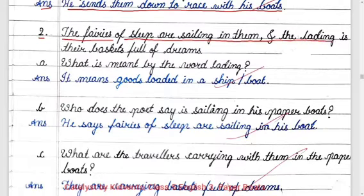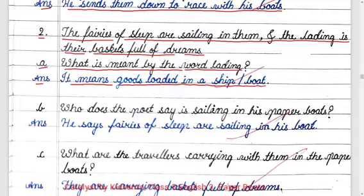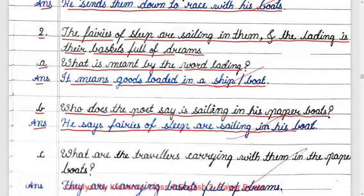Second question: 'The fairies of sleep are sailing in them and the lading is their baskets full of dreams.' Part a: What is meant by the word 'lading'? Answer: It means goods loaded in a ship or boat. Part b: Who does the poet say is sailing in his paper boats? Answer: He says fairies of sleep are sailing in his boat.